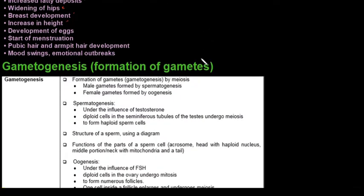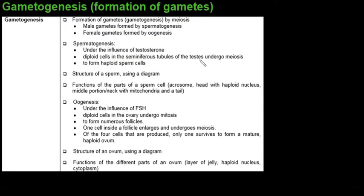Next we move on to gametogenesis, which is the formation of gametes. Breaking the word up: 'gameto' means gametes and 'genesis' means creation. In males it is known as spermatogenesis - creation of sperm. In females it is known as oogenesis - from 'ovum' or 'oocytes' and 'genesis', meaning creation of eggs.